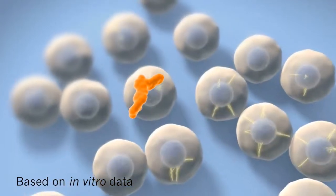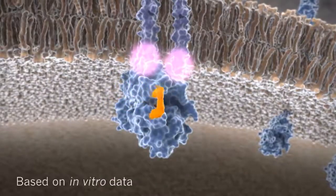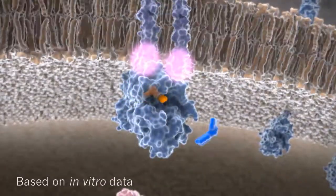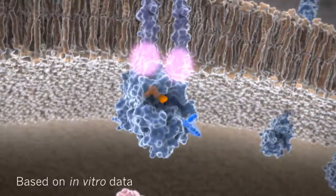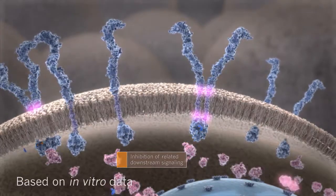In vitro data demonstrates that imatinib competitively binds to the ATP binding pocket of both active and inactive KIT, preventing or inhibiting activation. This is followed by inhibition of related downstream signaling.